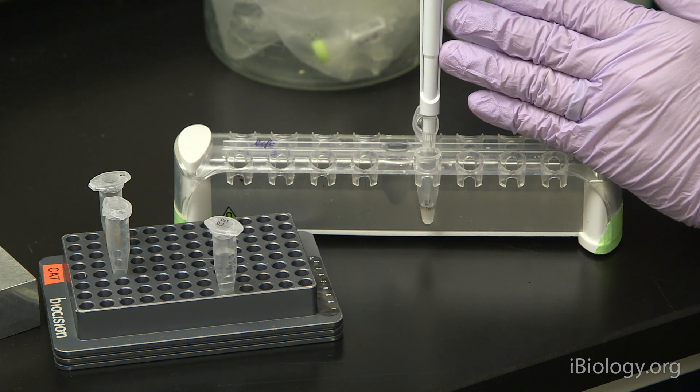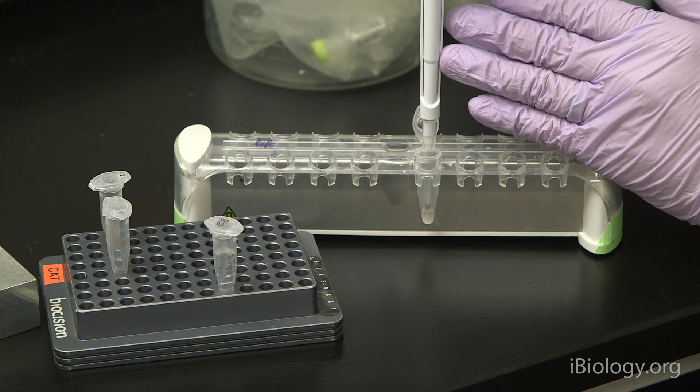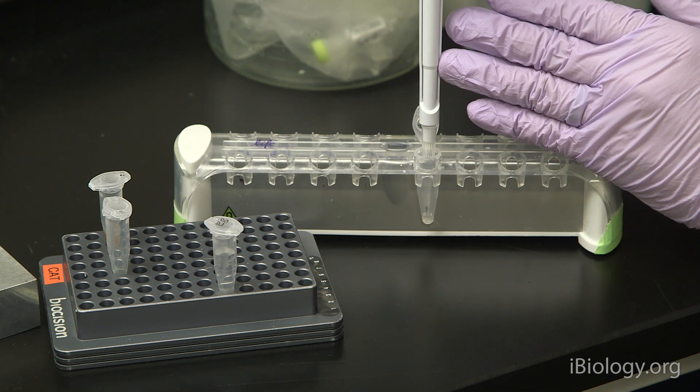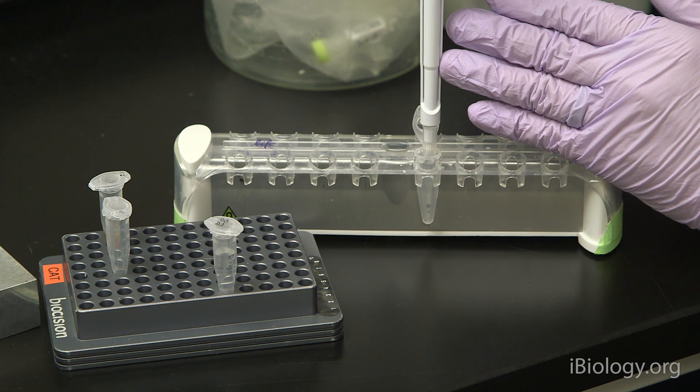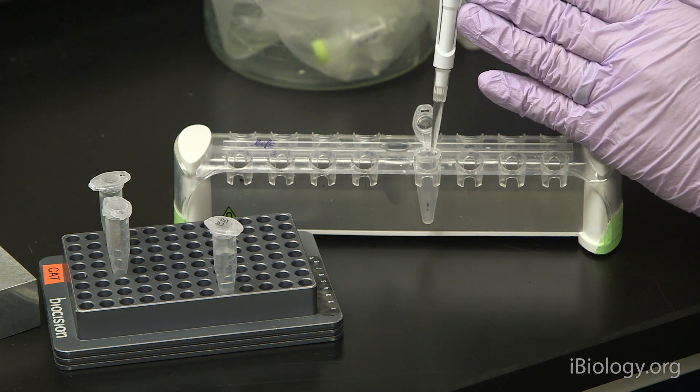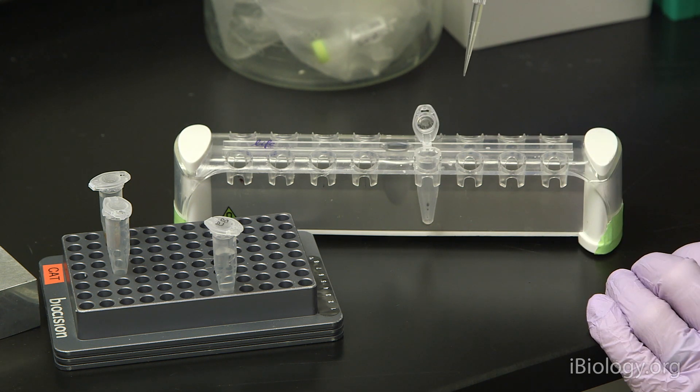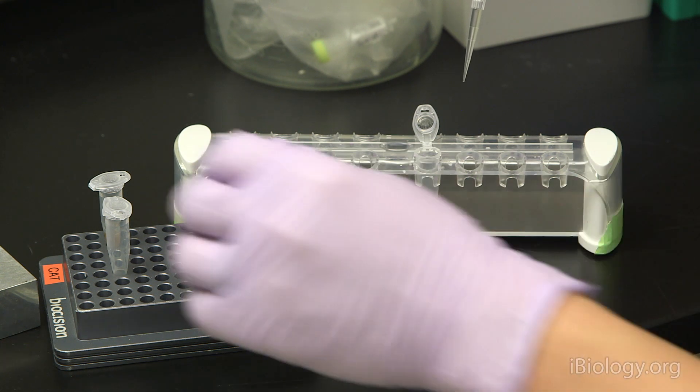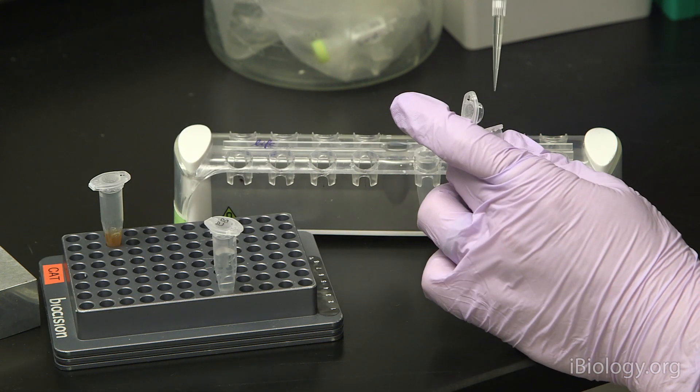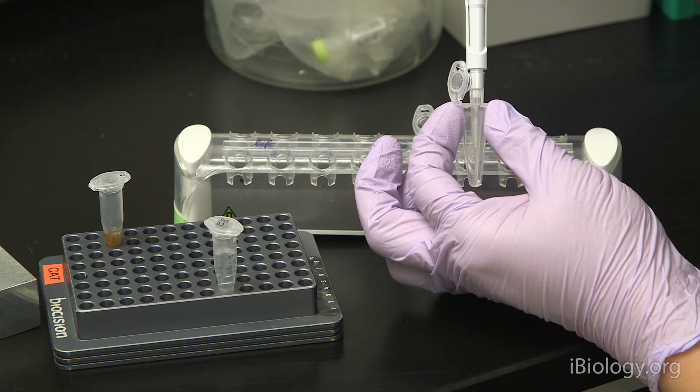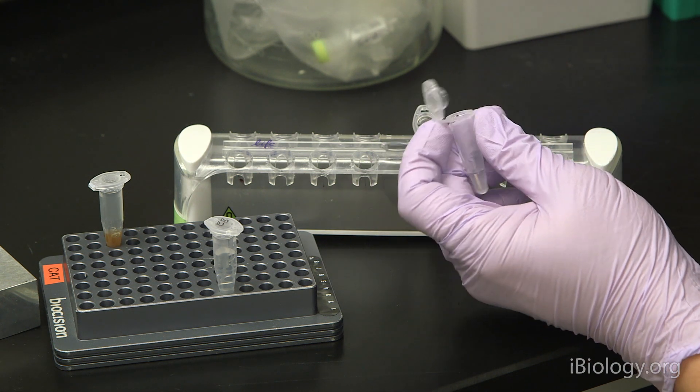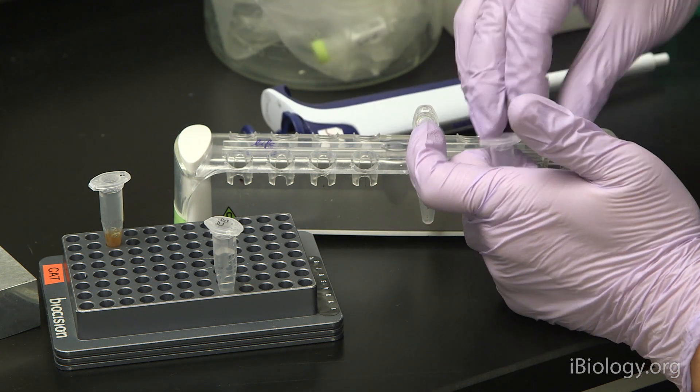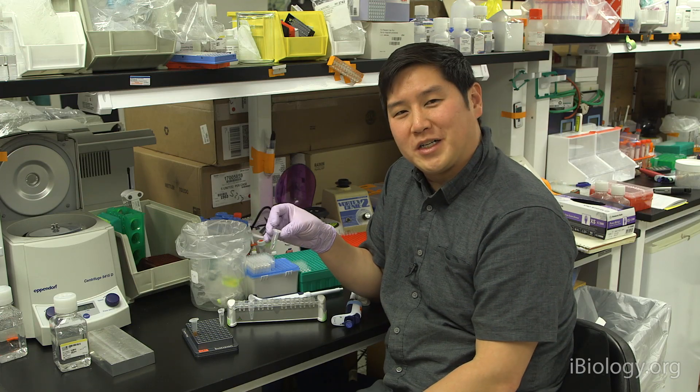You want to carefully remove your sample, and again not disturb the bead pellet at the back. If you notice that you've pulled up some beads, it's okay. Just go ahead and put your sample back in the tube and let the sample sit for a few seconds to allow the beads to stick back to the magnet. So now our eluate with our purified sample is in our new tube, and we've completed our cleanup. Thanks for watching.